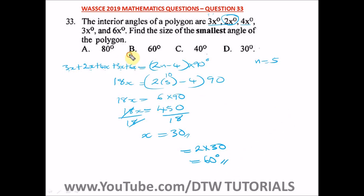The correct answer is option B. Notice this question was twisted — in past years they would directly give the total sum of interior angles and ask for the number of sides. Here, you were given the angles in terms of unknown x, so you had to solve for x first to find the smallest angle. Be aware of how the exam body can twist questions around polygons.